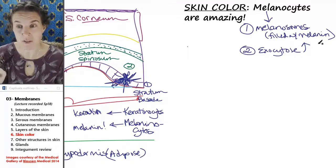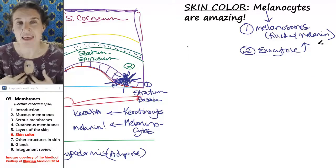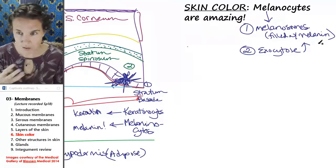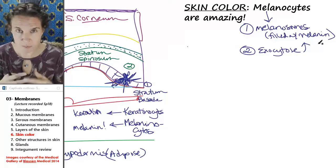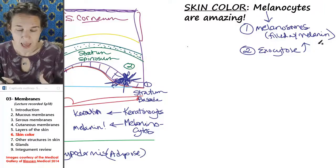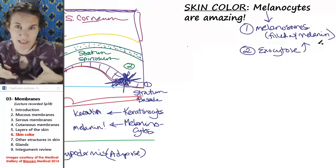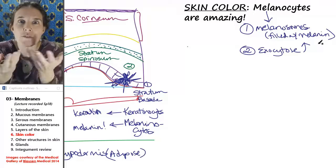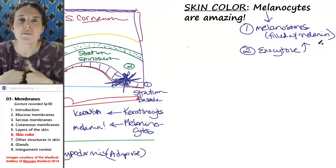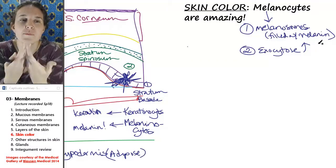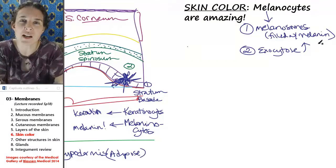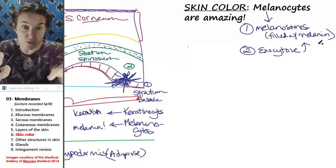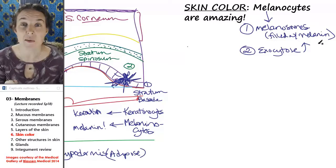Think about this for a second. They're producing all these bubbles of melanin, and they basically release the bubble. They barf the bubble — they exocytose the bubble out into the rest of the epidermis.